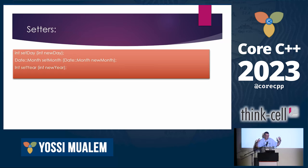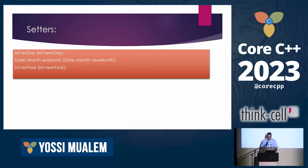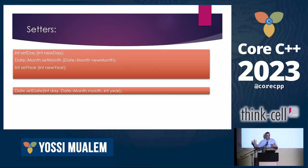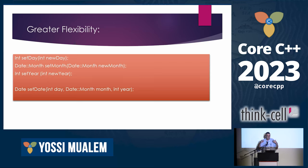We added the requirement to update the date, came up with a solution that had a problem. If we have a problem that's hard to solve, maybe we should think of a different design that takes the problem away altogether. In this case it's very simple — we just replace the three methods with a single setDate that takes three integers. Then we don't have the problem of which order to call those methods.